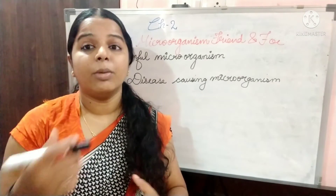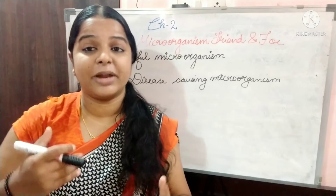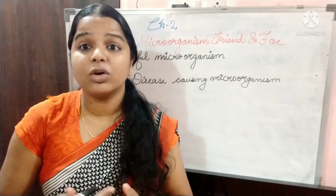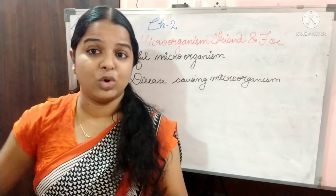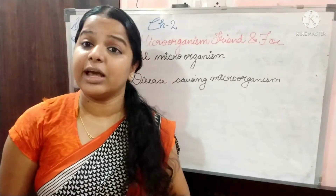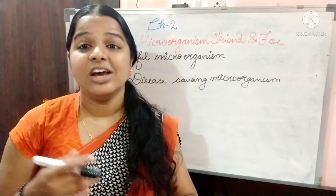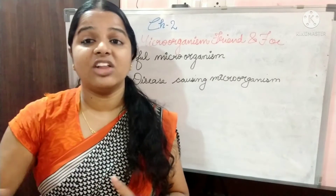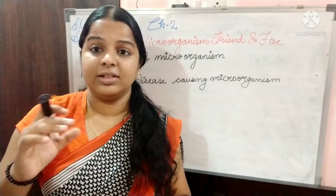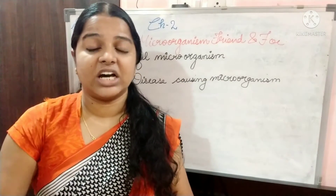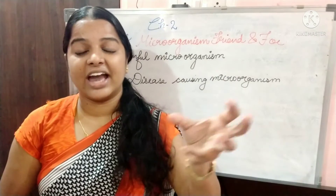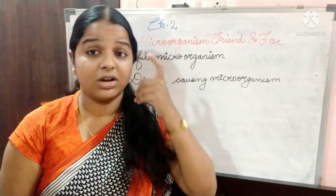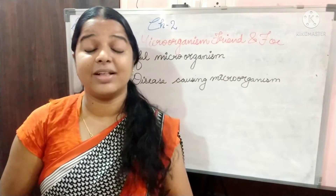Communicable disease means it will spread from one person to another — like corona spreads from one person to another; that type of disease is called communicable. Non-communicable disease means it is transferred through vectors. Vectors are the insects that carry disease-causing pathogens; for example, malaria and dengue.